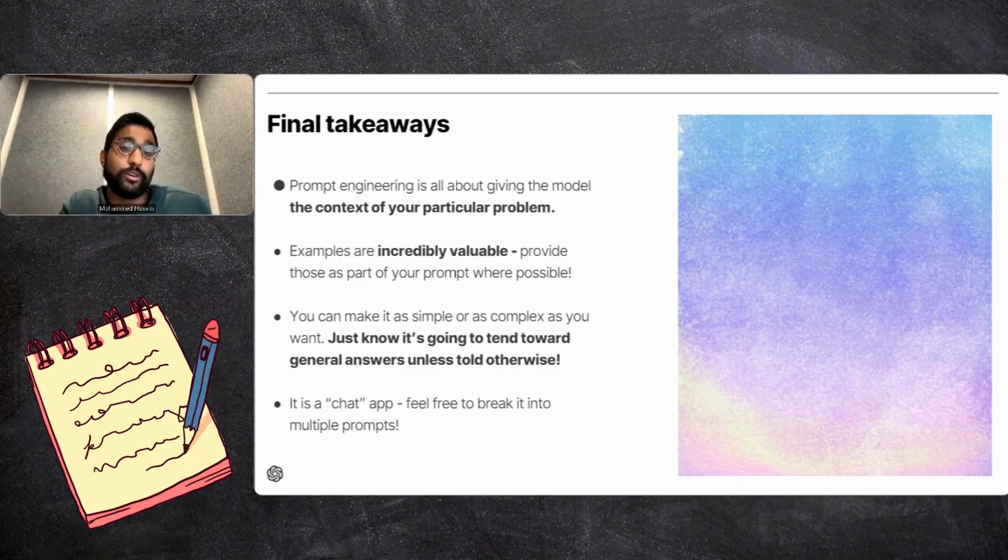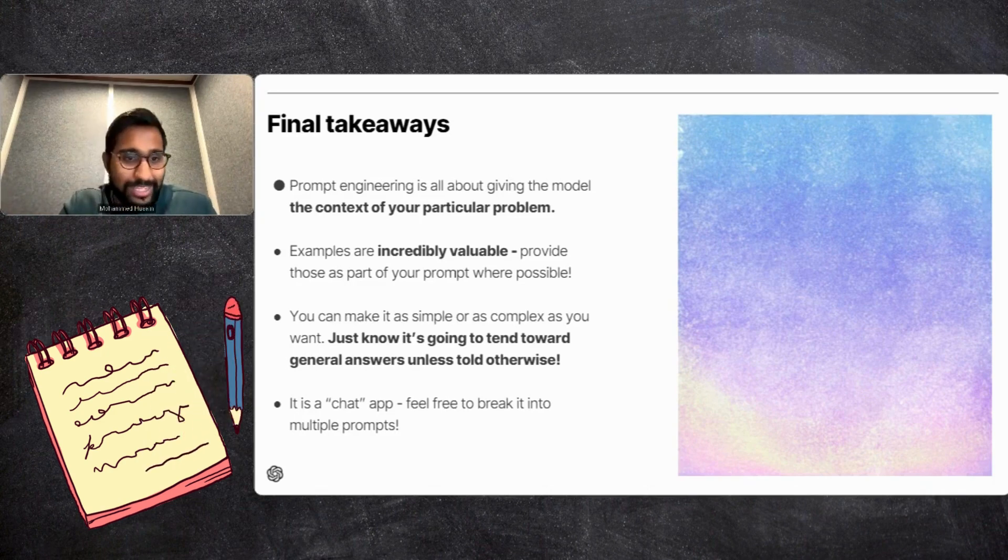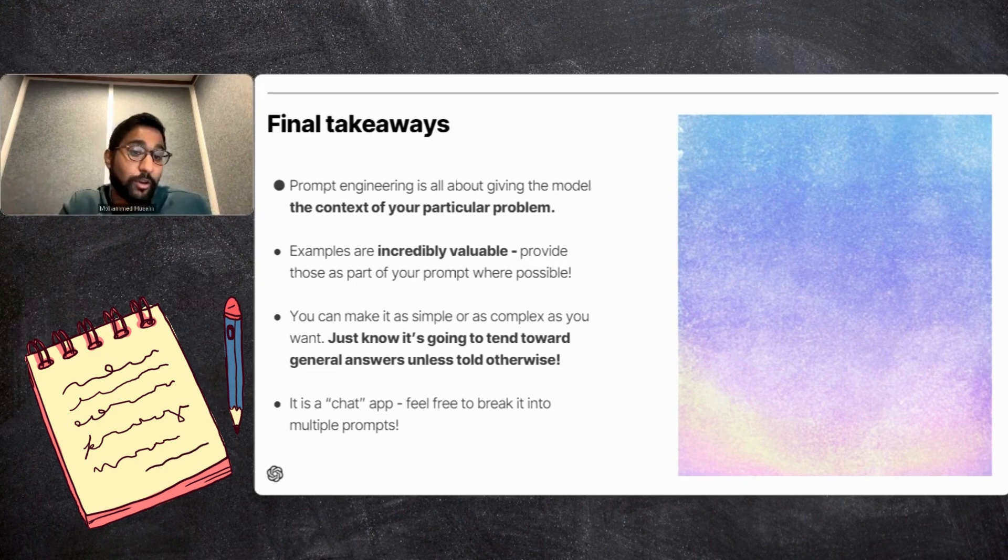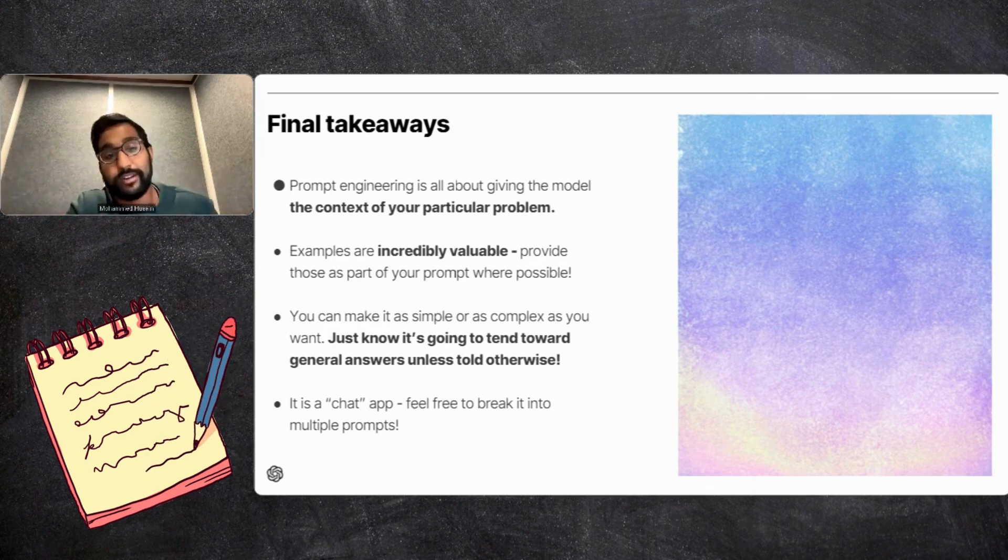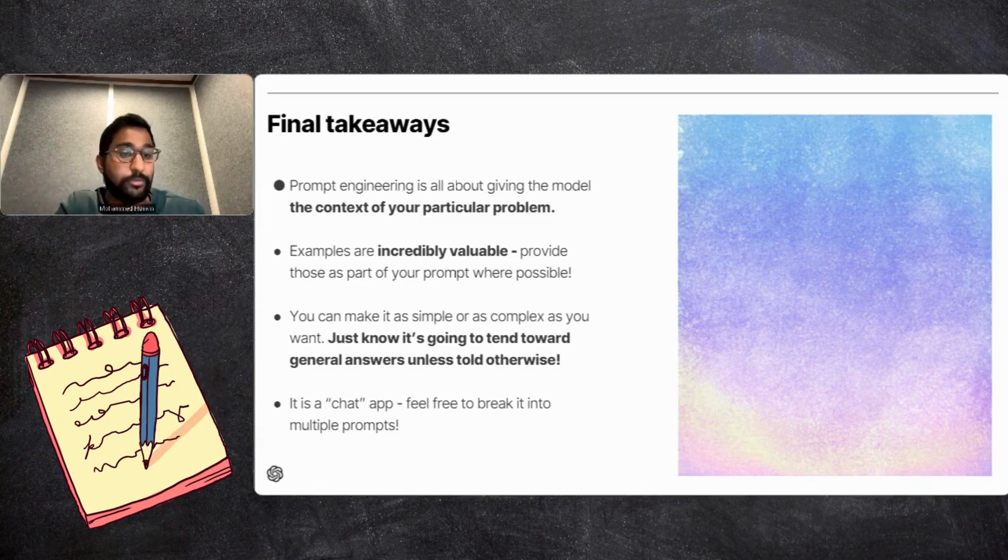The second one is that examples are incredibly valuable. So if you have examples of 'here is what good looks like' and you provide that as part of your prompt, that is incredibly valuable because one thing these models are very good at is pattern matching. So taking one example or two or three examples and then applying that pattern to a new set of data, that's something that these models are very good at. So if you're able to provide those examples as part of your prompt, that's very valuable as well.